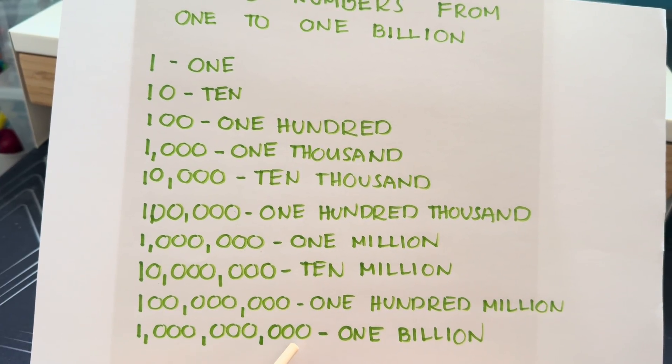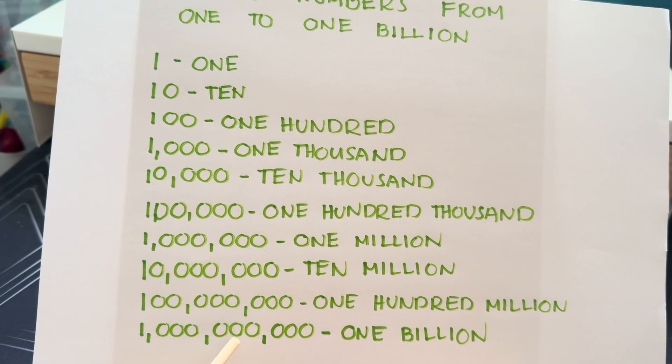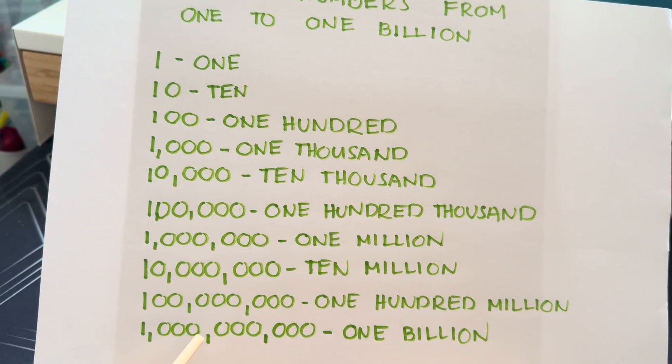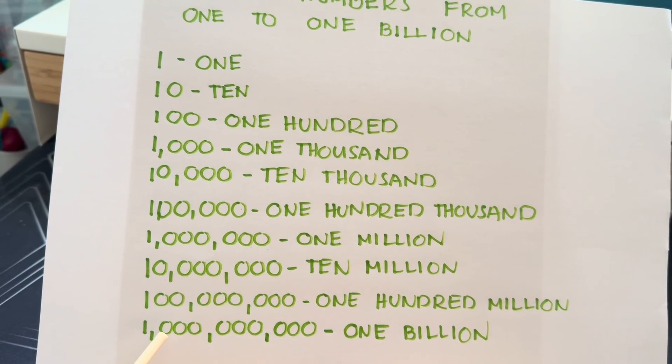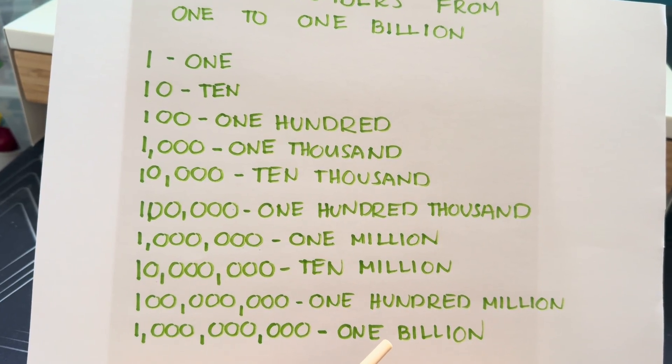we have 1, 2, 3, 4, 5, 6, 7, 8, 9 zeros in 1,000,000,000.